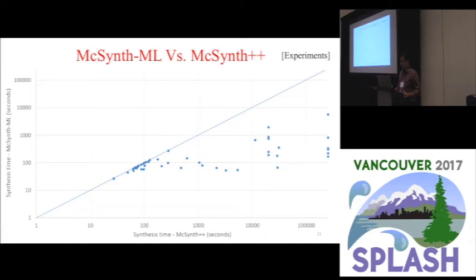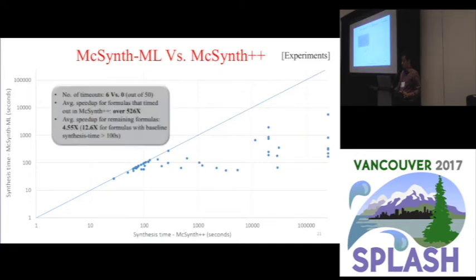Okay, so how does all this work? Here are what the synthesis times for McSynth ML look like in comparison to McSynth++. The axes are in log scale. It should be noted that McSynth++ timed out on six of the 50 formulas, and the timeout value was three days. So, for those, we have no idea how long it would have taken to finish. McSynth ML did not timeout on any of the formulas in the test suite. The reason for the timeout is that these test items required subformulas which could only be implemented by at least three instructions. For these formulas, McSynth ML produced an average speedup of at least 526 fold.